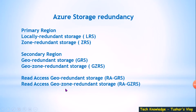Hello everybody, today I am going to explain the Azure storage redundancy options. In total there are six redundancy options, but broadly they are classified into two categories: primary region and secondary region. I'll cover each of them one by one.